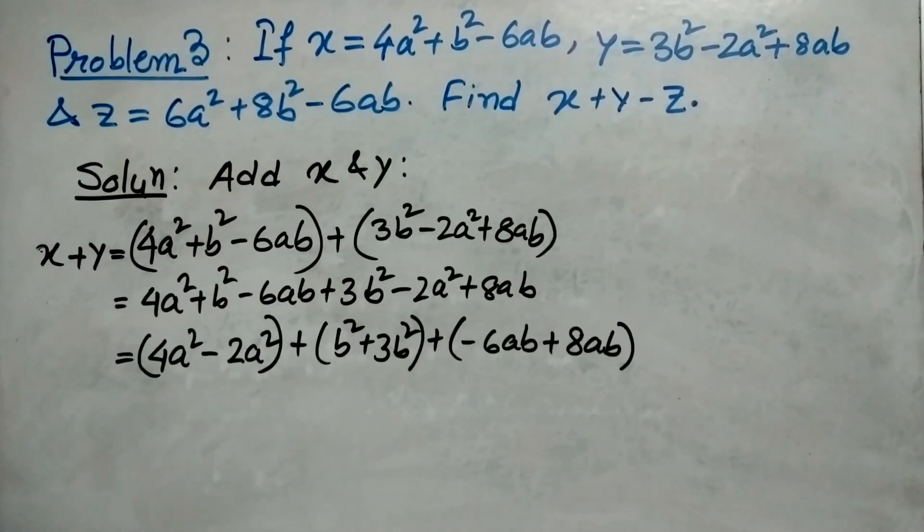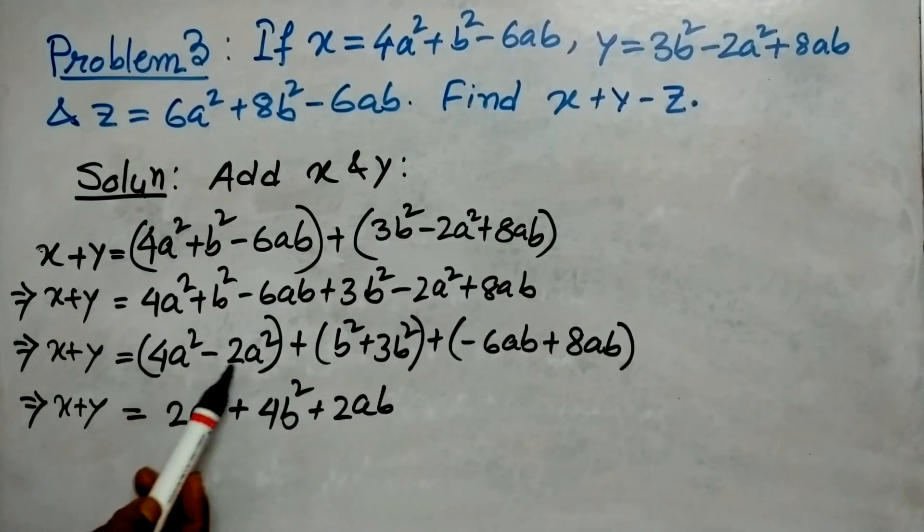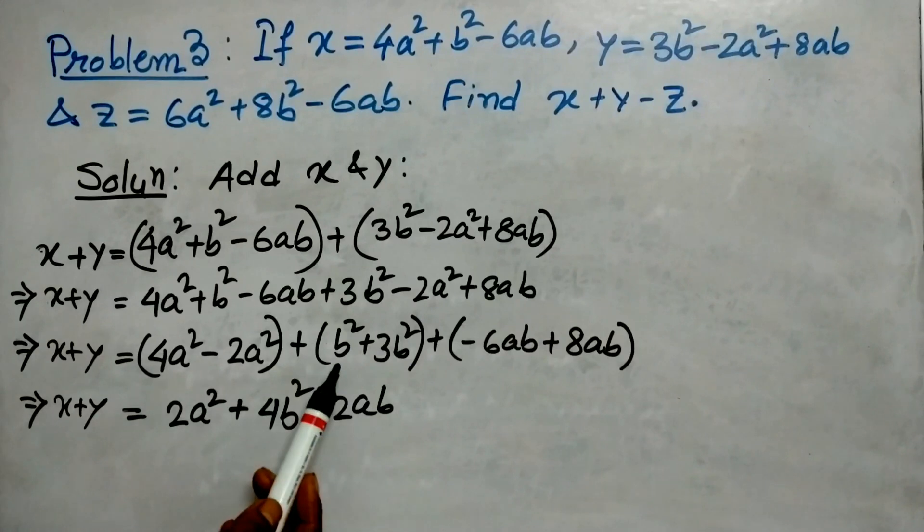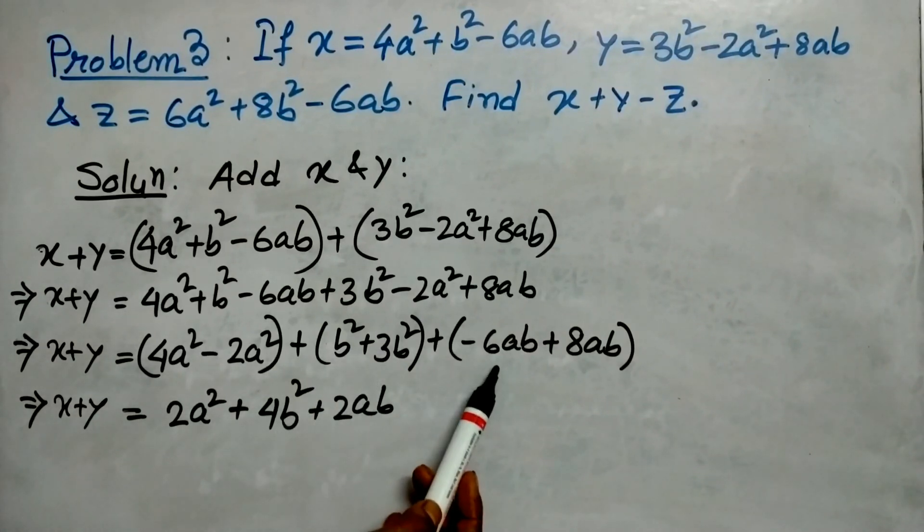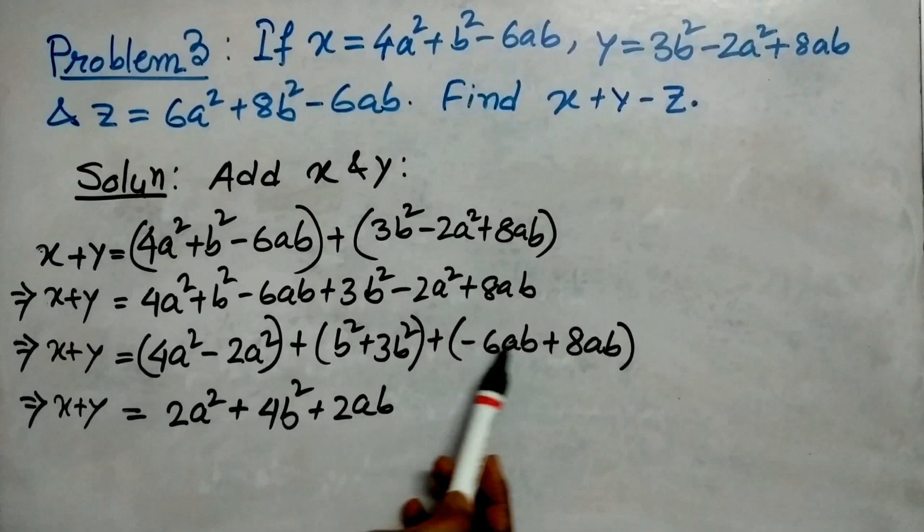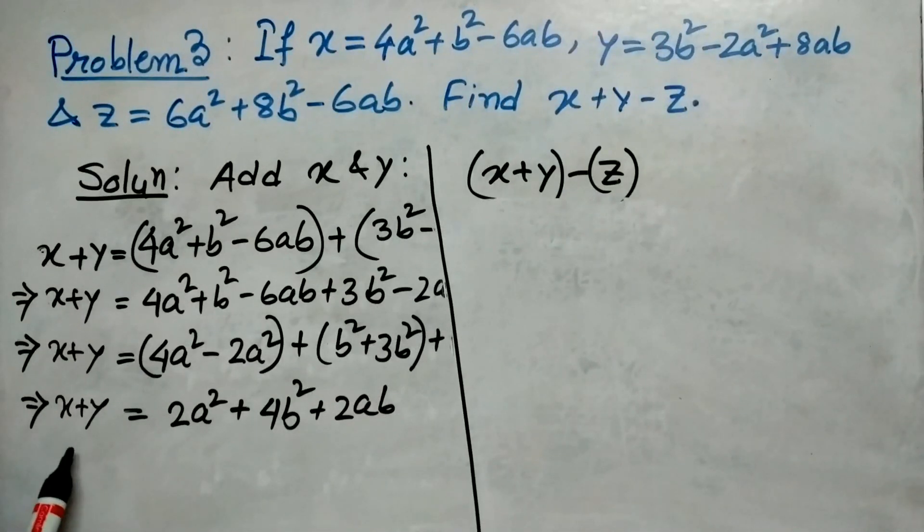Add x plus y and open the bracket. Next segregate the like terms. 4a²-2a² is 2a², b²+3b² is 4b², -6ab and 8ab gives 2ab. This was our first step to find x+y.